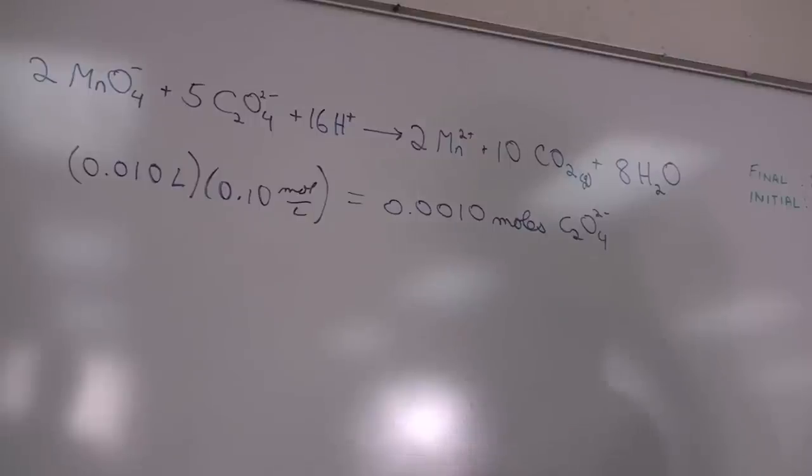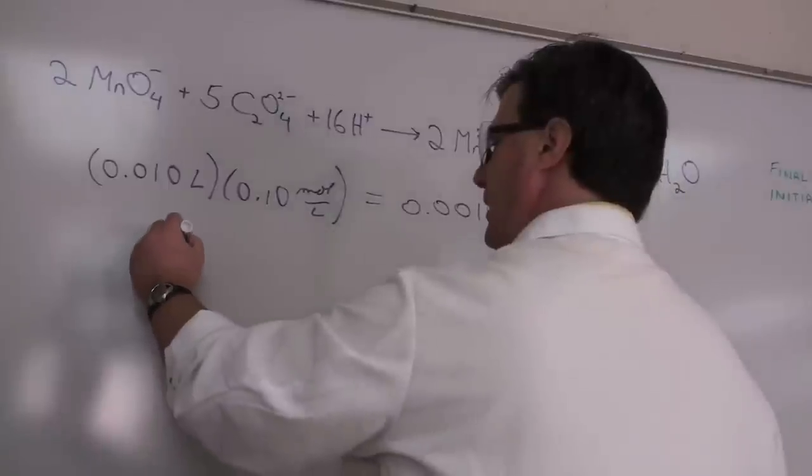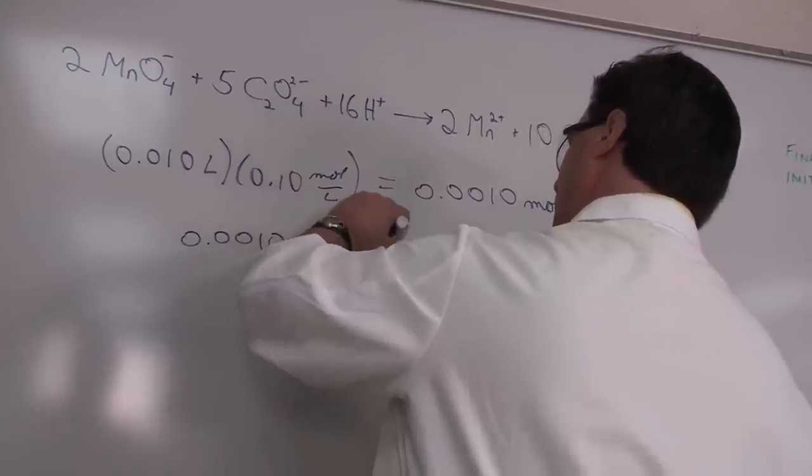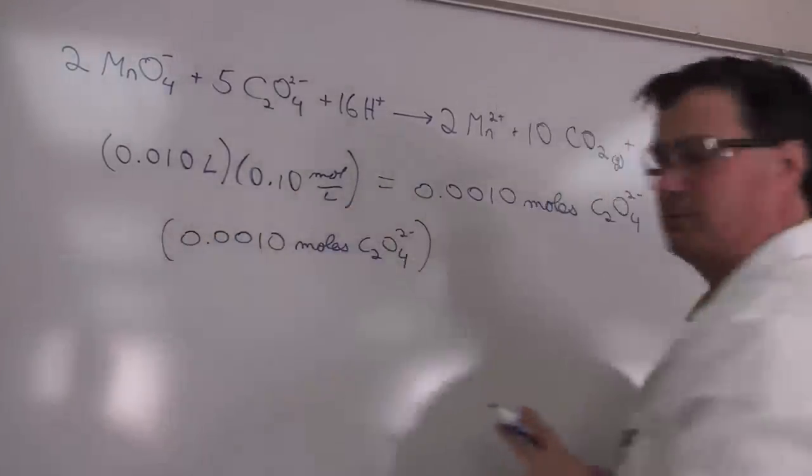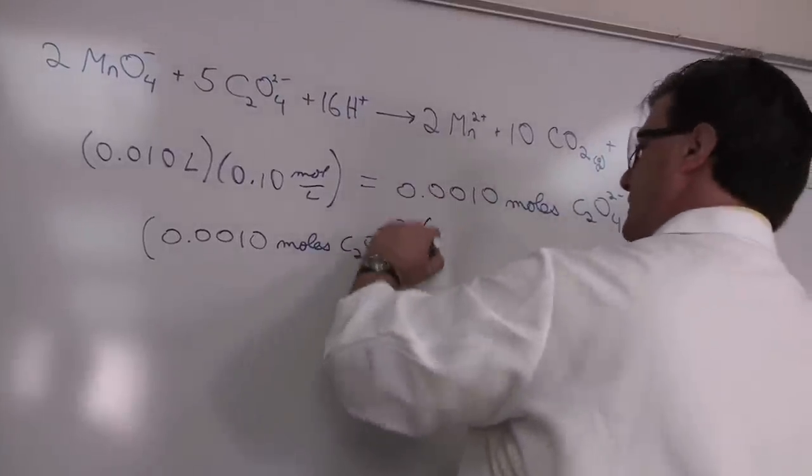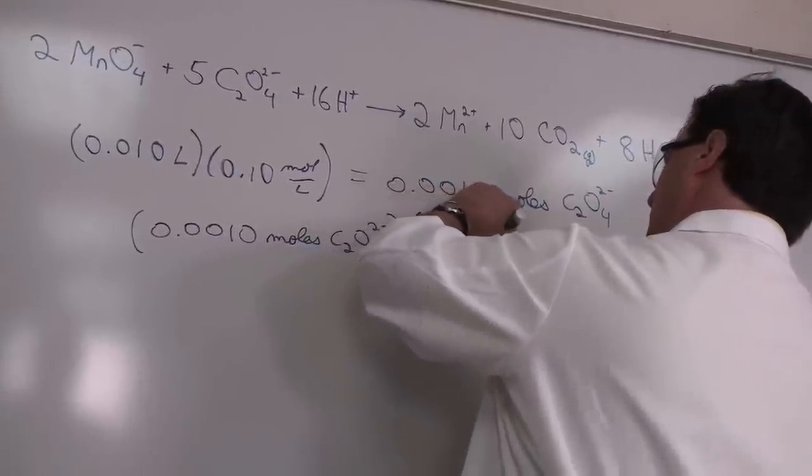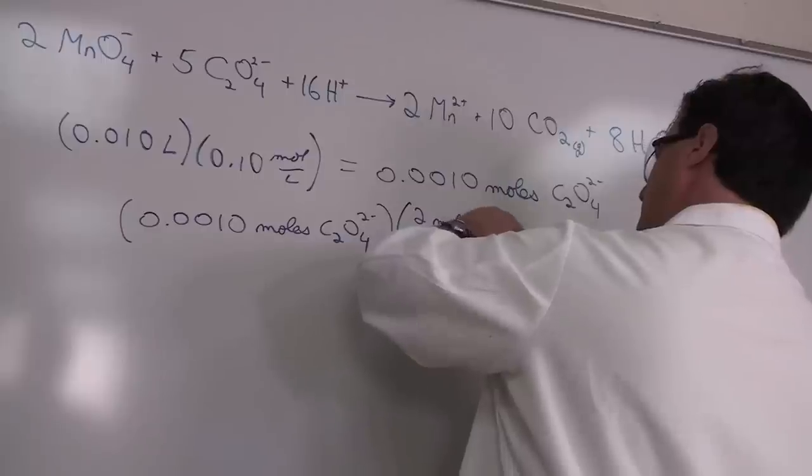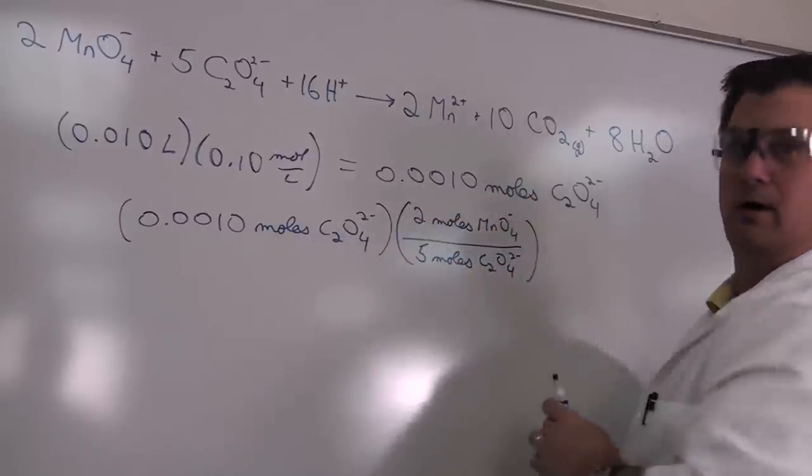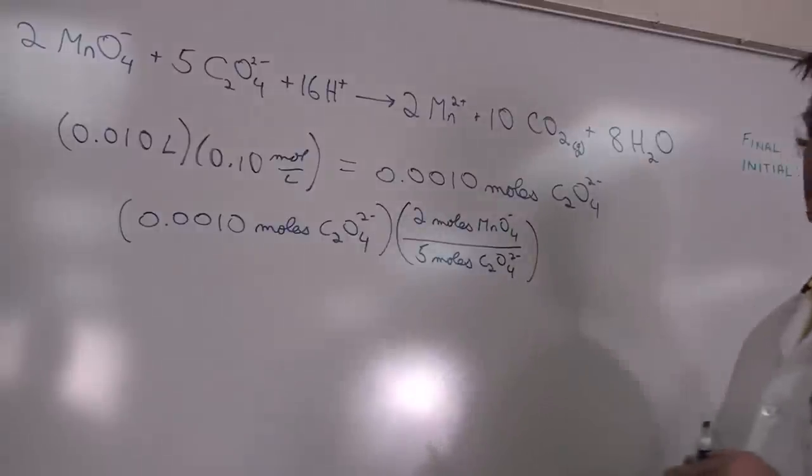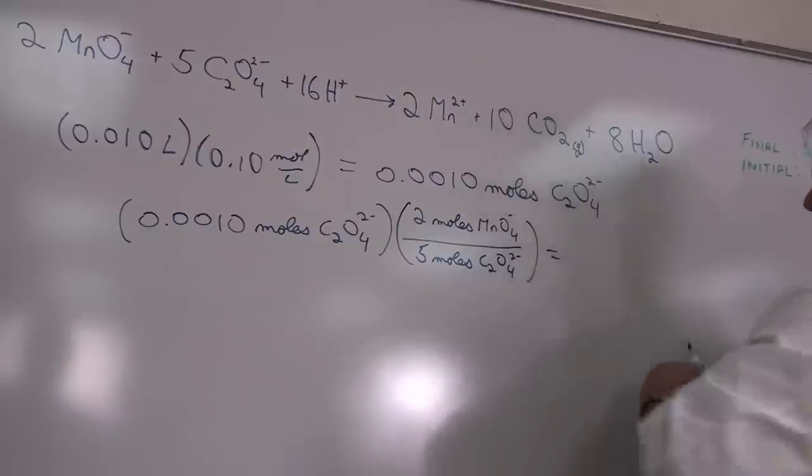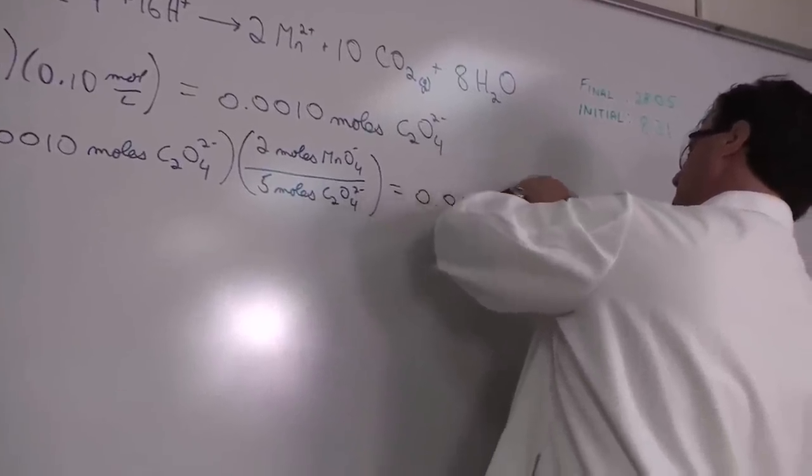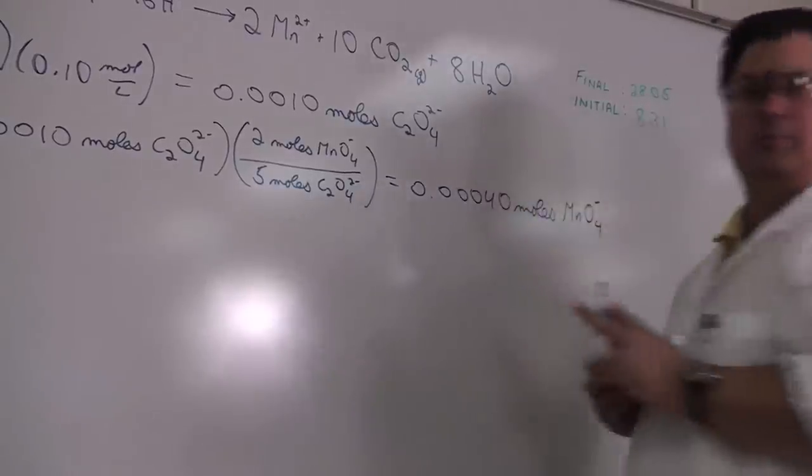Now we use the stoichiometry of the reaction to convert that to moles permanganate added. So I'm going to write that out: 0.0010 moles of oxalate, and then you multiply that by the stoichiometric conversion factor, which in this case is 2 moles of permanganate per 5 moles of oxalate. The 2 and the 5 are just the stoichiometric coefficients in the balanced chemical reaction. If you do that calculation, you find that you have 0.00040 moles of permanganate added.